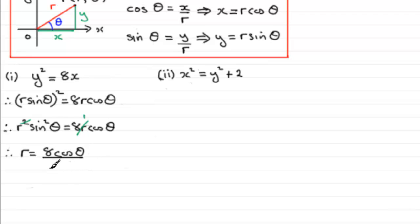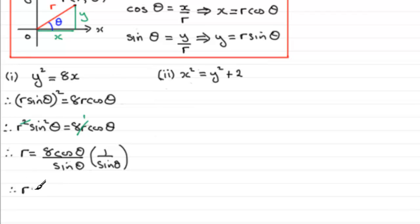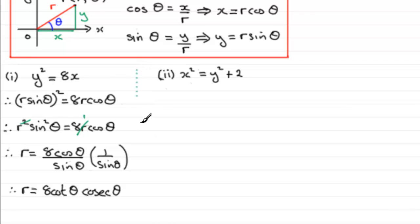I'm going to split that sine squared theta as sine theta multiplied by another 1 over sine theta, so that I can create cos theta over sine theta, which is cotangent theta, or cot theta for short. So we have r equals 8 cos theta, and 1 over sine theta is cosec theta. So r equals 8 cot theta cosec theta. That's example one done.